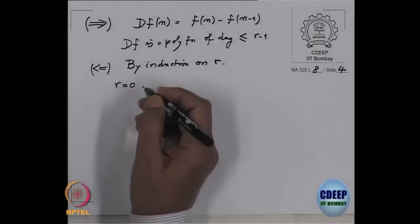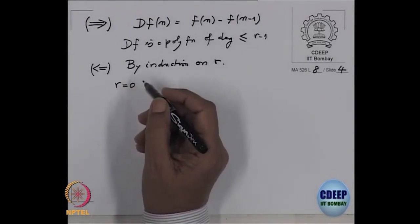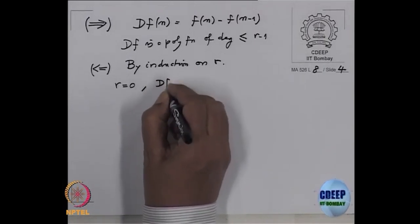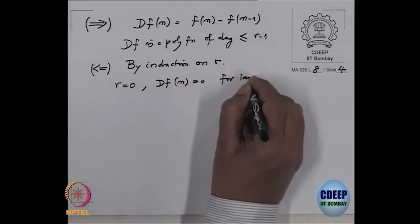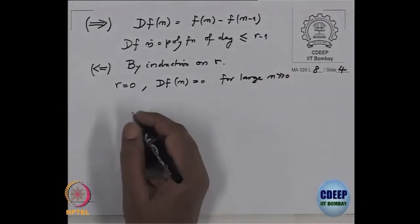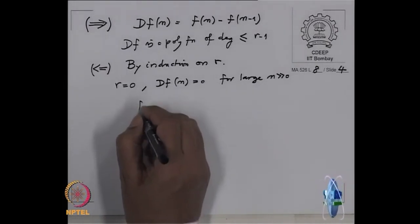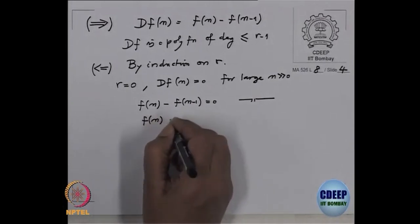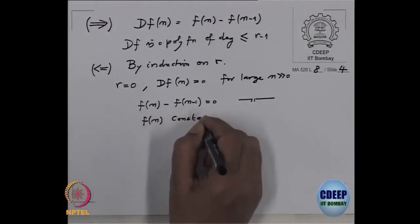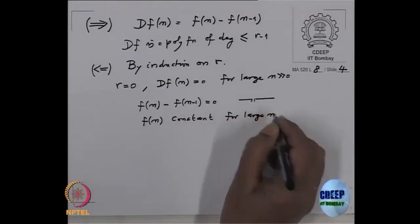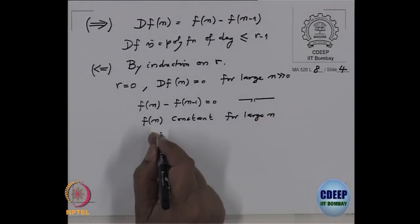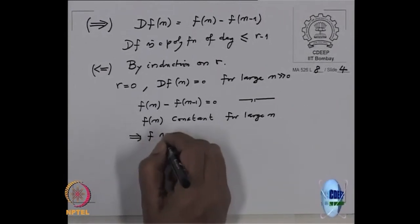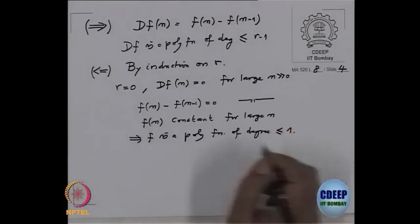For the base case r = 0: Δf is a polynomial function of degree less than or equal to −1, which means Δf is the zero polynomial. So Δf(n) = 0 for large n, meaning f(n) − f(n − 1) = 0 for large n. Therefore f(n) is constant for large n, which means f is a polynomial function of degree less than or equal to 0. This proves the assertion for r = 0.